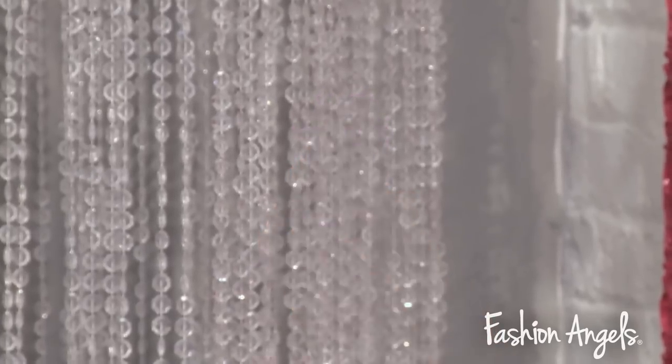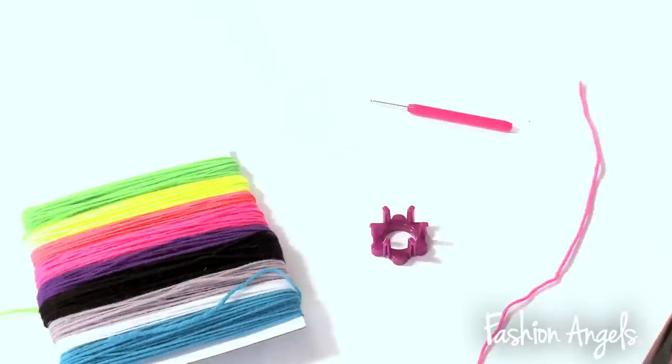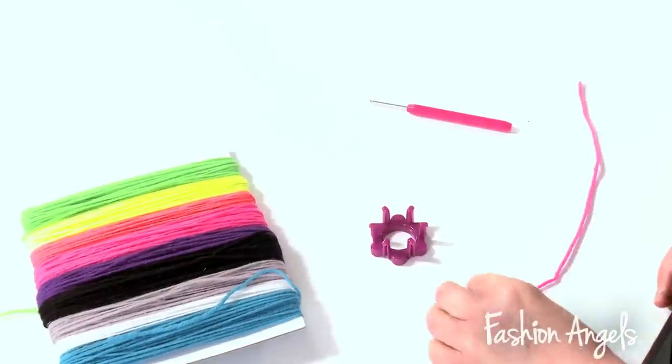A loom, a hook, a needle, two pom makers and some yarn. Let's begin. First, grab your pink yarn and wrap it around the first peg of your loom.